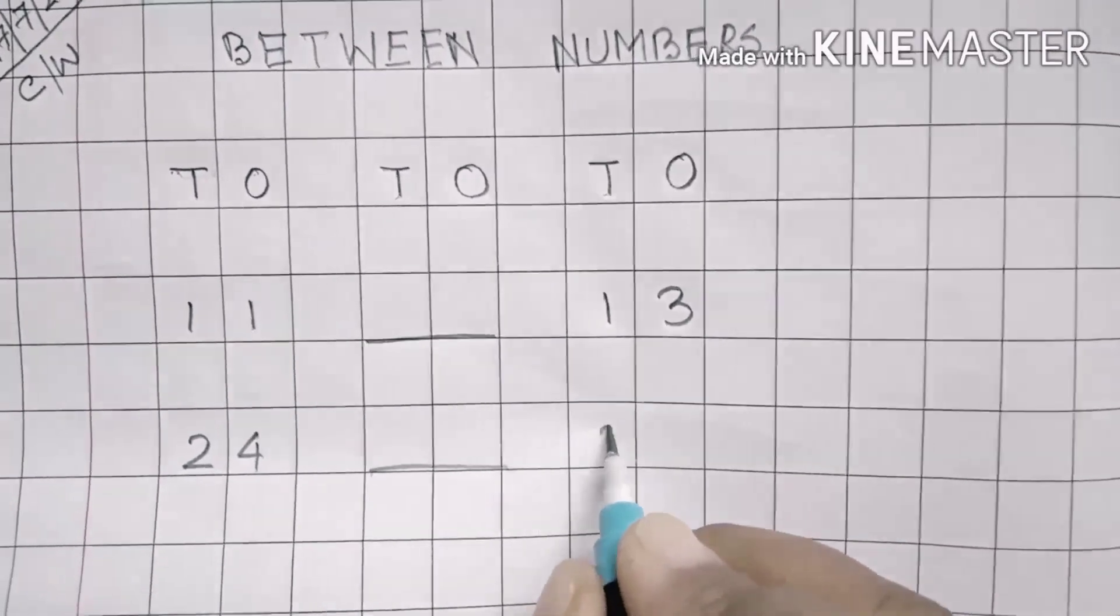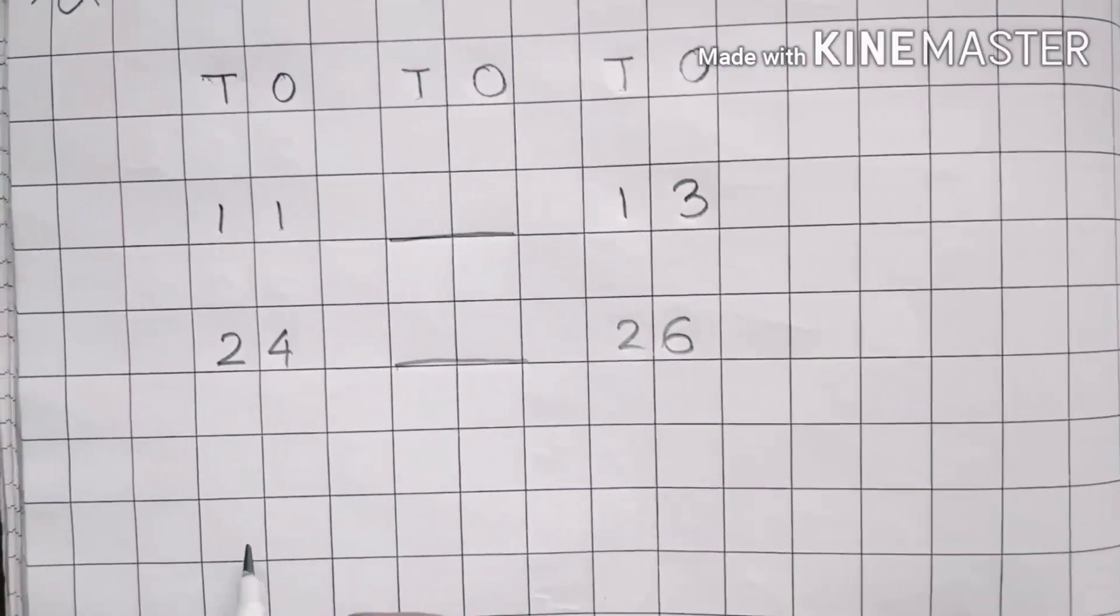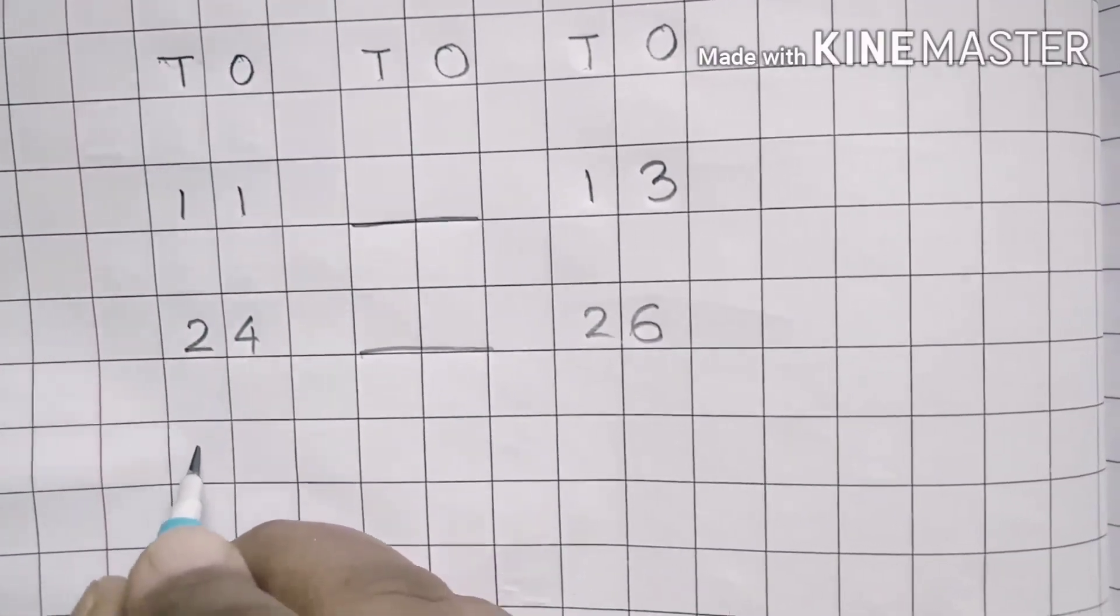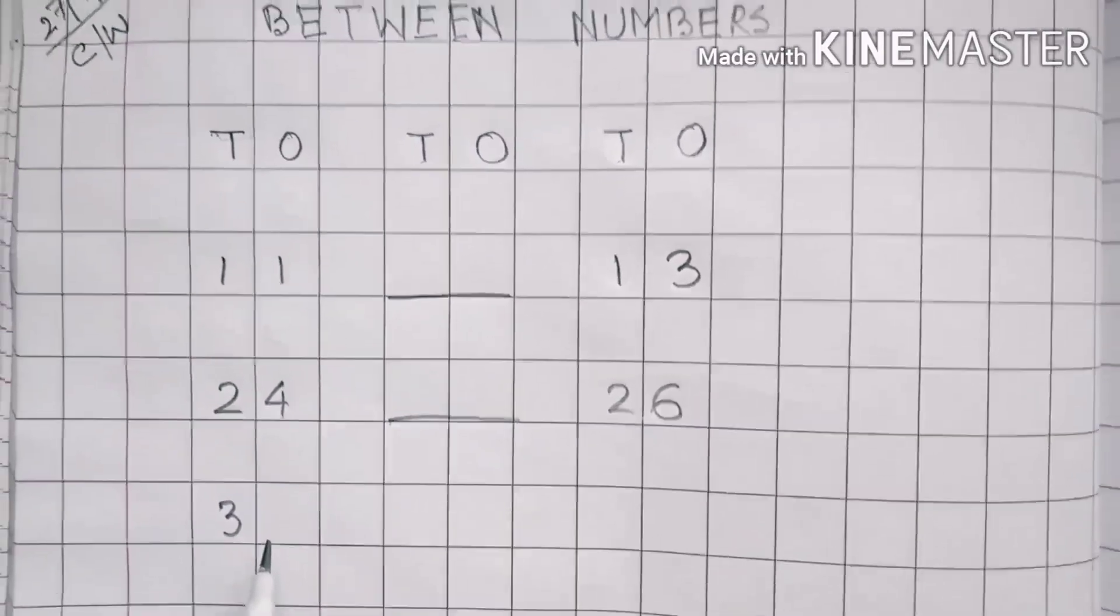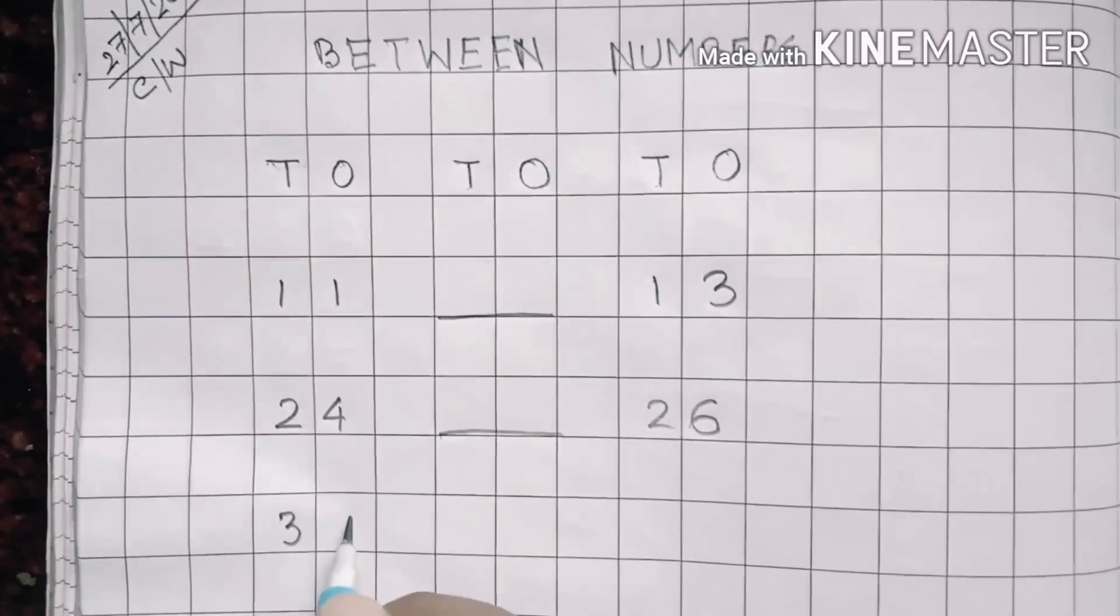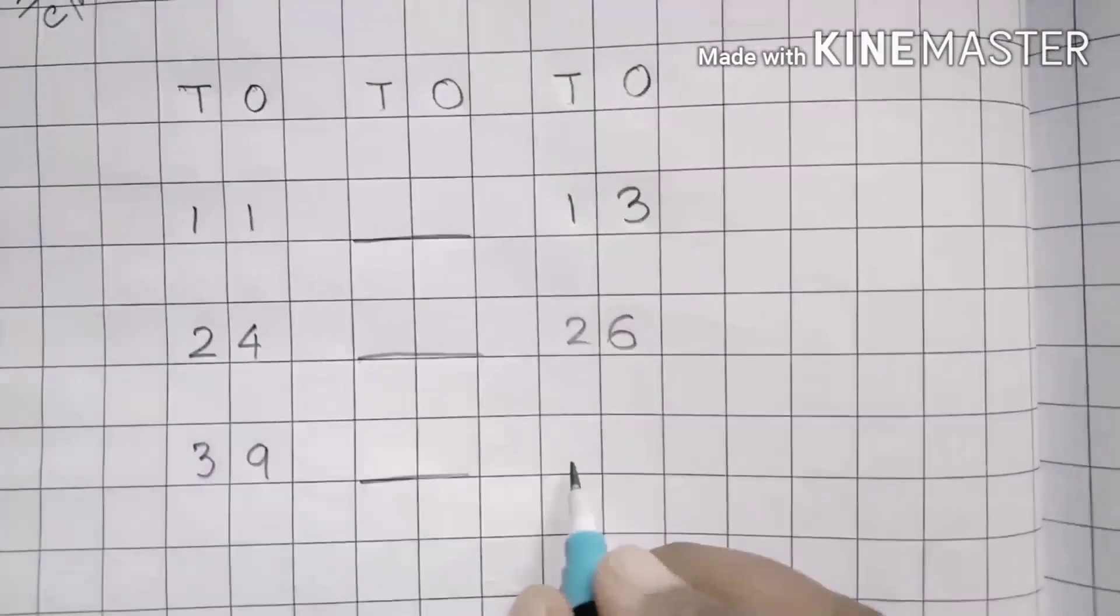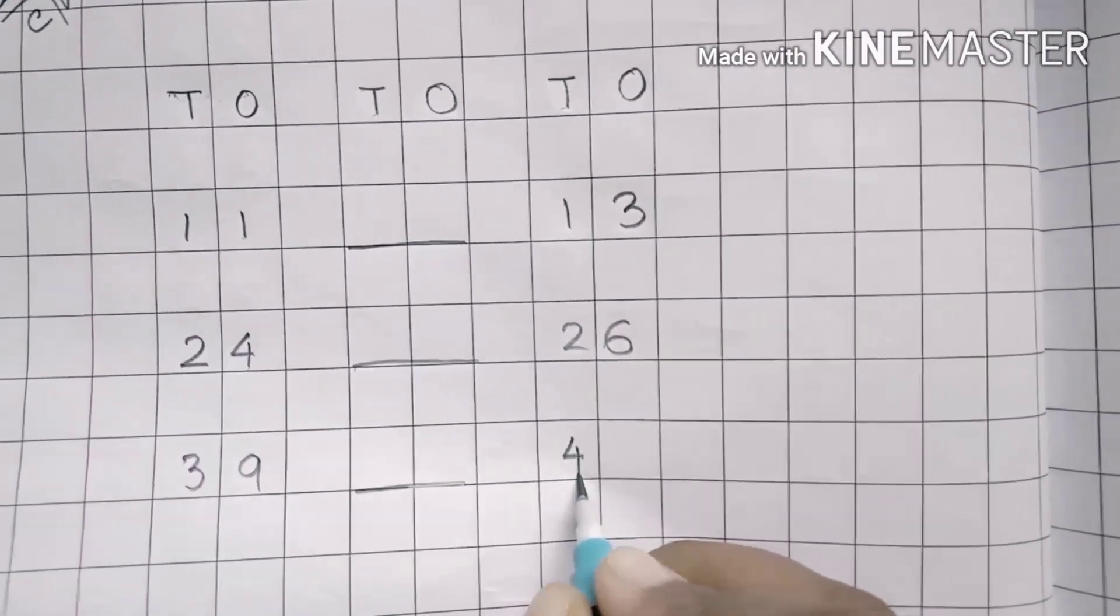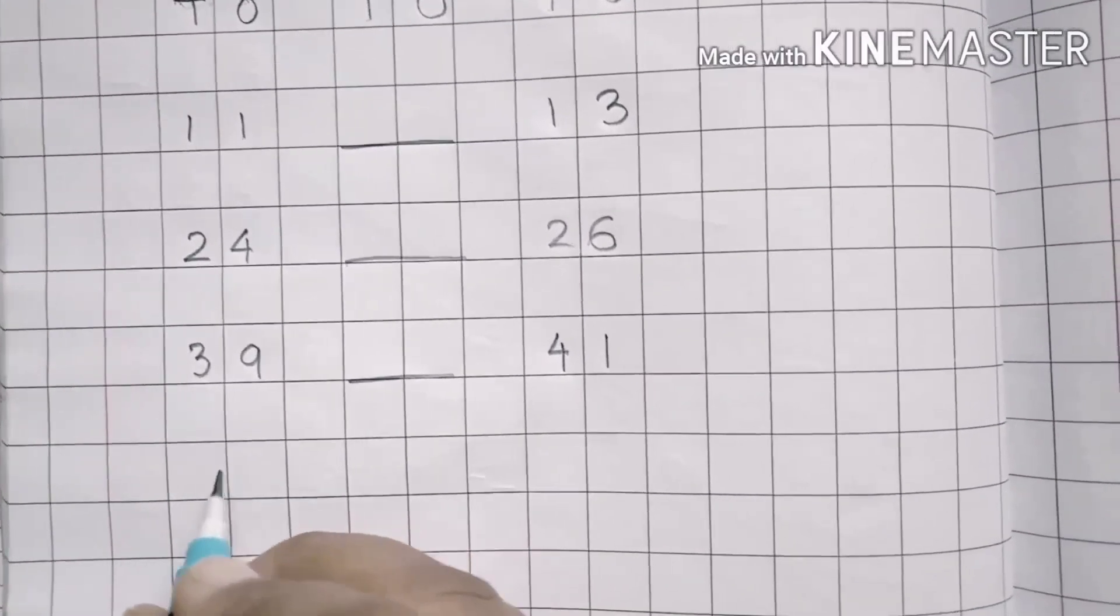Now write here 3, it should be under tens, and then 9 - 39. Give a dash, then write here 4, 1 - 41. Which number will come in between 39 and 41?